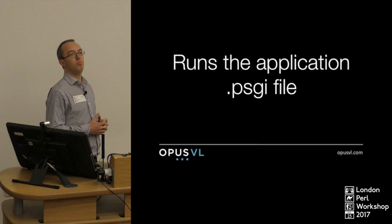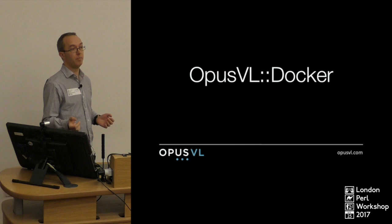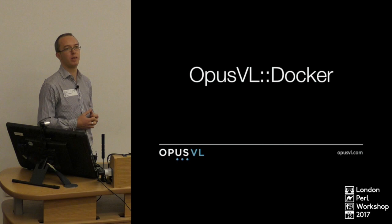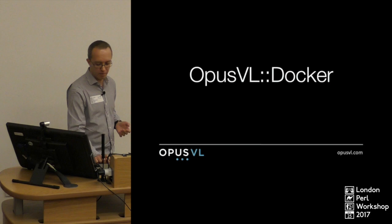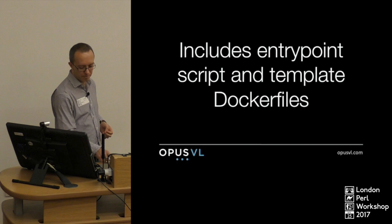What does the entry point do? It runs the application PSGI file that we already provided. Where do we get an entry point from? Go to CPAN. We've released a very generic entry point for running PSGI applications on CPAN. If you add that module to your Makefile.PL as a dependency, you'll automatically get the entry point scripts, and there are some template Dockerfiles to look at in there as well.